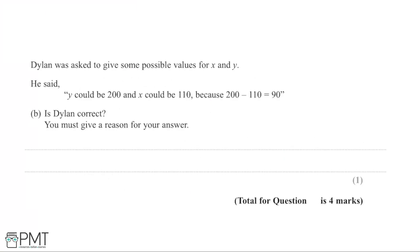So we're now told that Dylan was asked to give some possible values for x and y. He said that y could be 200 and x could be 110 because 200 minus 110 is equal to 90, so y minus x equals 90, which is what we saw in the previous part of the question. And we're asked whether Dylan is correct, giving a reason for the answer that we decide on.